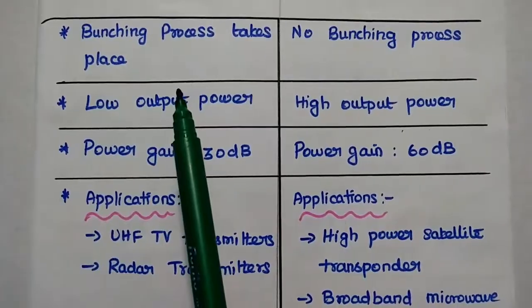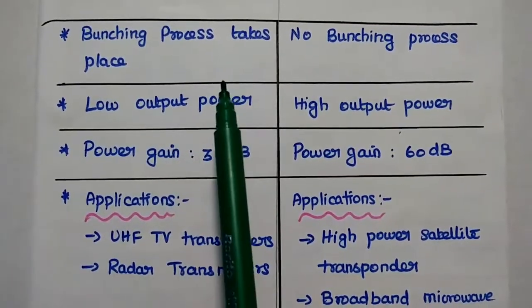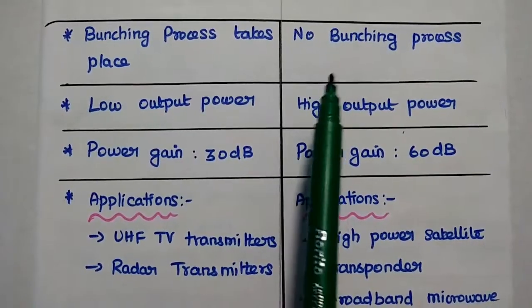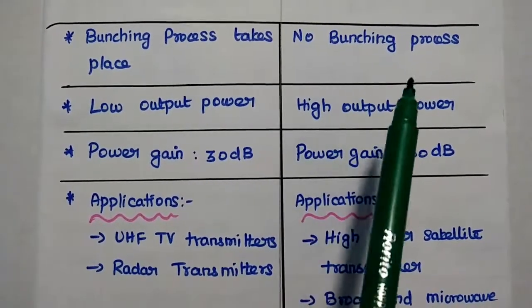In two cavity klystron amplifier, bunching process takes place in the buncher cavity. But in this TWTA, there is no bunching process.